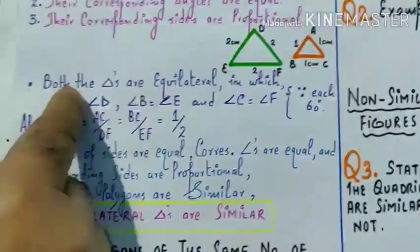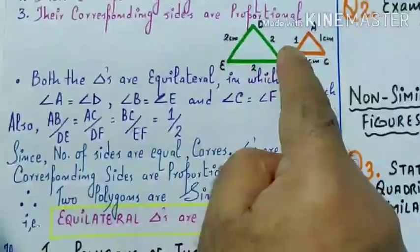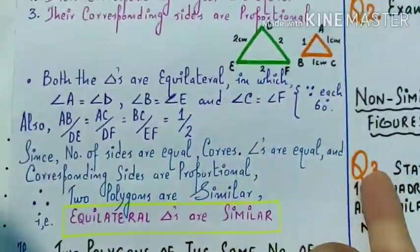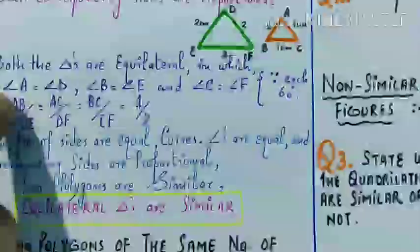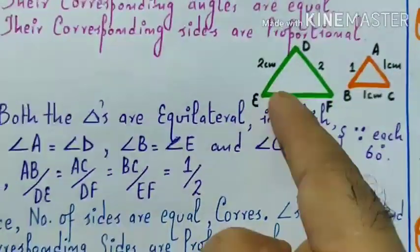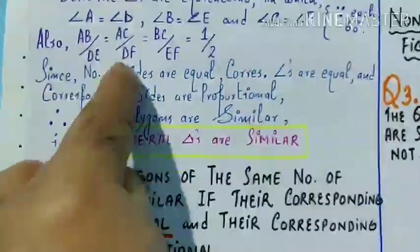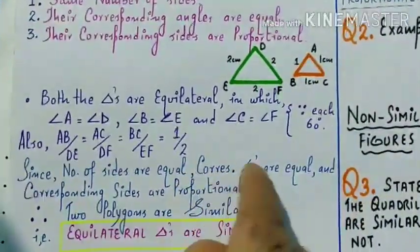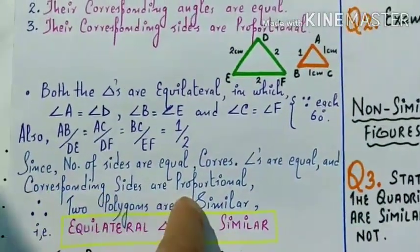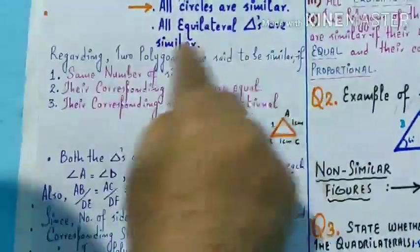Both triangles are equilateral — angle A = angle D, angle B = angle E, angle C = angle F, each 60°. फिर AB/DE = AC/DF = BC/EF = 1/2 — all ratios are equal. Since number of sides are equal, corresponding angles are equal, and corresponding sides are proportional — therefore two polygons are similar. I mean to say, equilateral triangles are similar — तब ही यहां लिखाता मैंने: all equilateral triangles are similar।